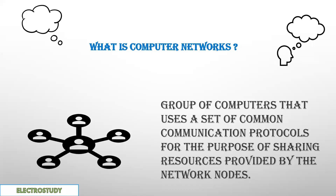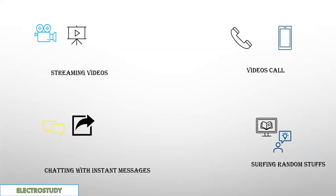What is a computer network? It is just a system that connects two or more computing devices for transmitting and receiving information. Best scenarios I can tell you are connecting any number of people through video calls, streaming videos, chatting with instant messages, or random things we access on the internet.